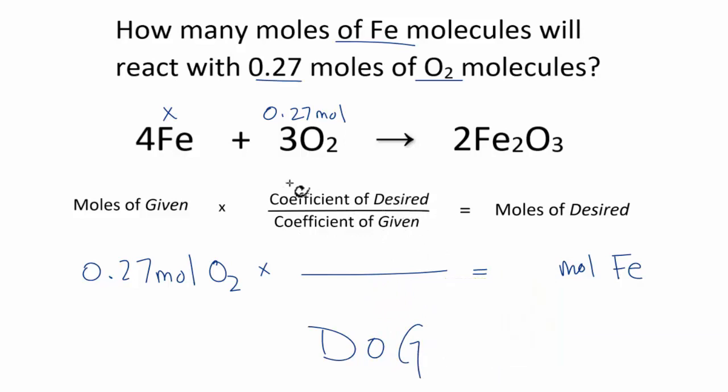One way to remember how to set your mole ratio up is that it's desired over the given, d-o-g. So our desired, what we're looking for, is moles of Fe, and we're given moles of oxygen. Now all we need to do is go up and look at the coefficients. 4 moles of Fe for every 3 moles of oxygen. We multiply 0.27 times 4, that's our 1.08, divide by 3, and we get the same answer, 0.36 moles of iron. What's nice about this is that when we multiply the top and divide by the bottom, moles of oxygen cancel out. We're left with moles of Fe, which is our answer here, and we know that we've done it right. So estimating and then using one of these two methods, preferably this one, will get you the right answer.